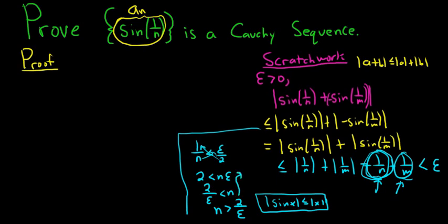Via the Archimedean property, we can choose a natural number bigger than 2 over epsilon. Given any real number — and 2 over epsilon is certainly a real number since epsilon is greater than 0 — we can find a natural number that is bigger. That's the Archimedean property, and we'll invoke it in our proof to choose our capital N.